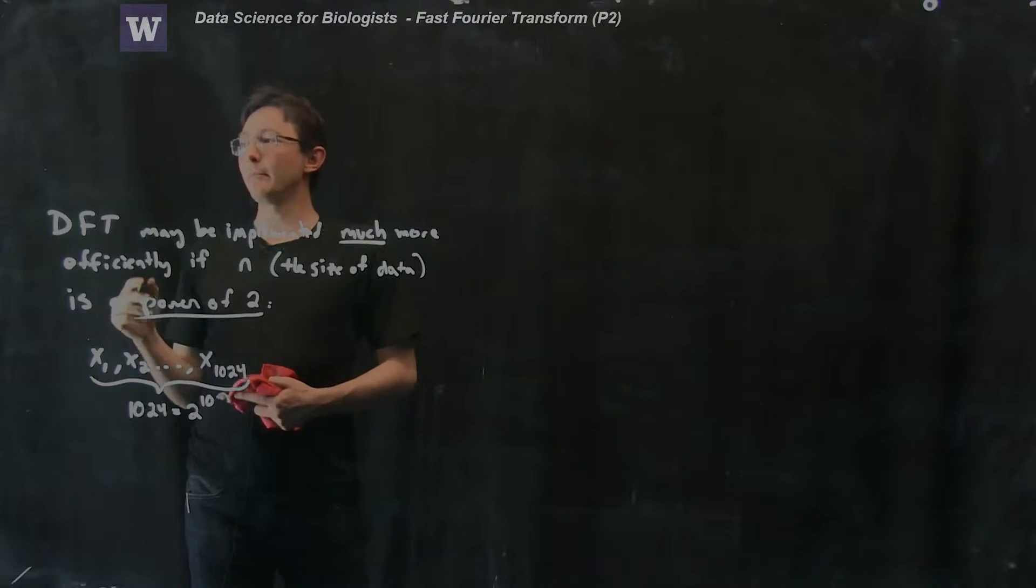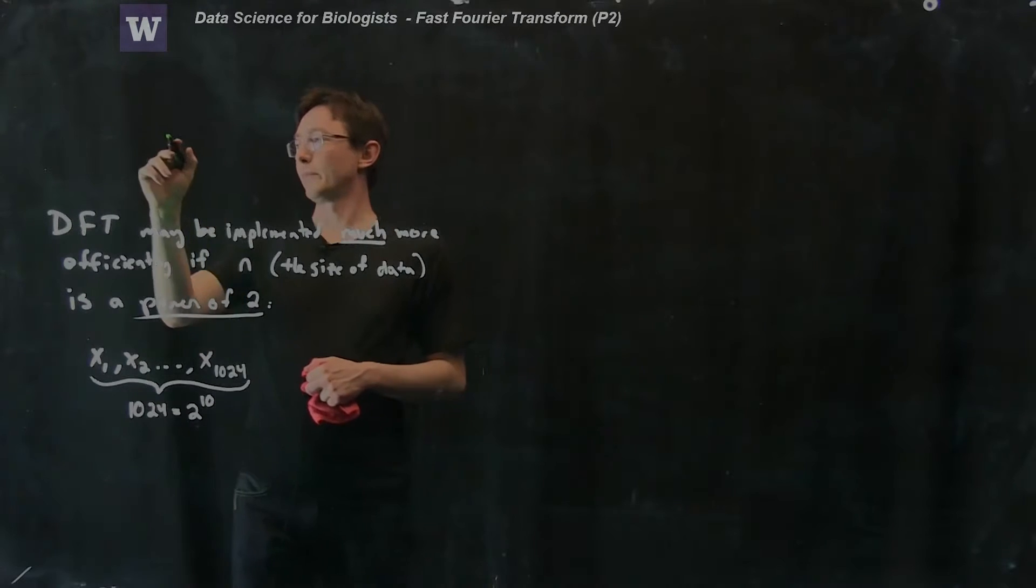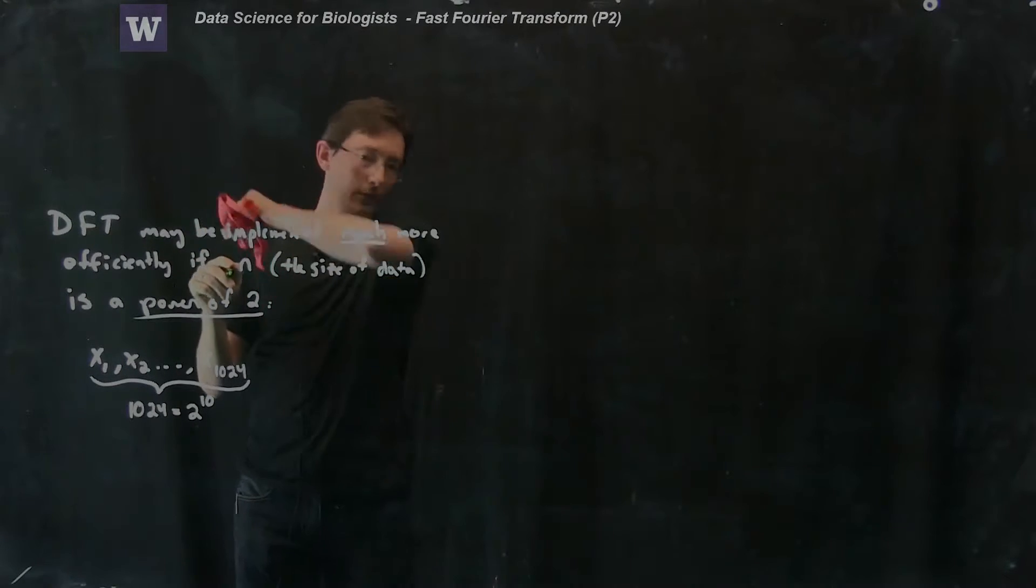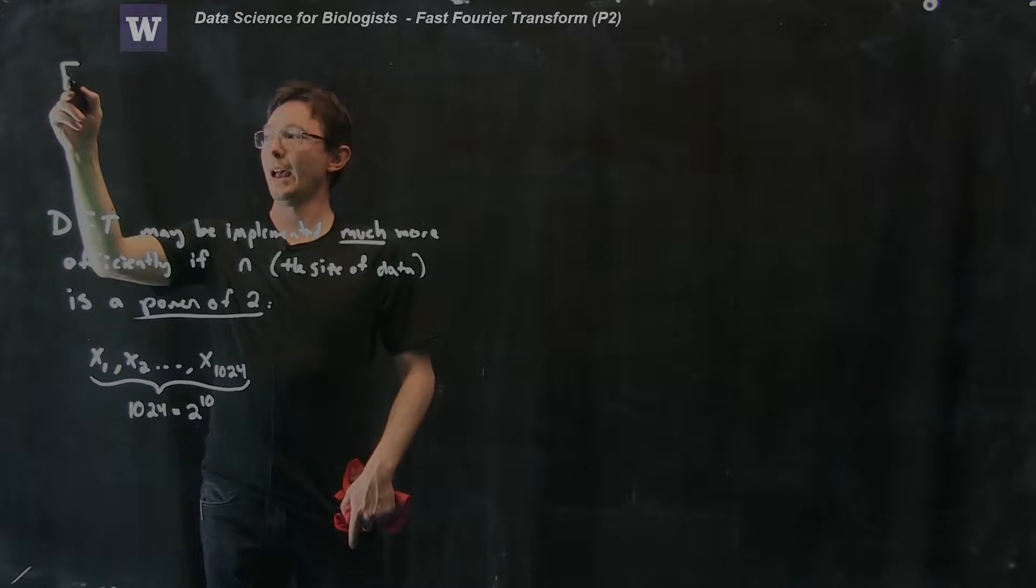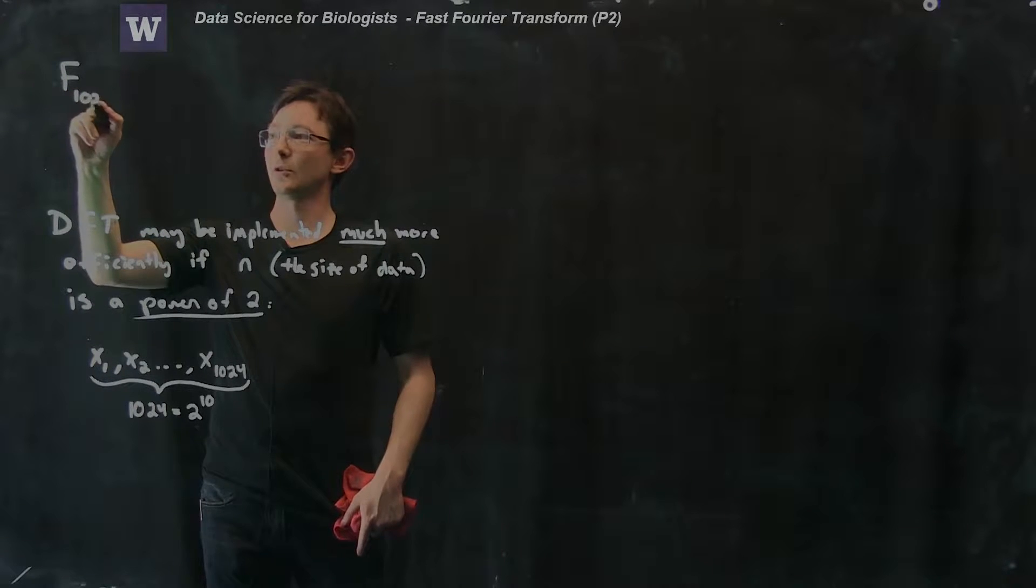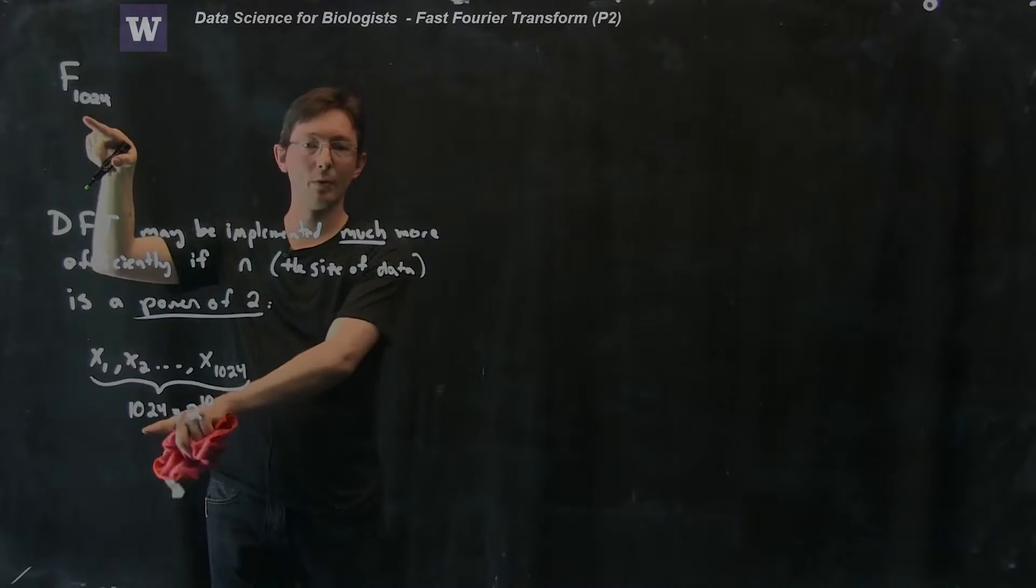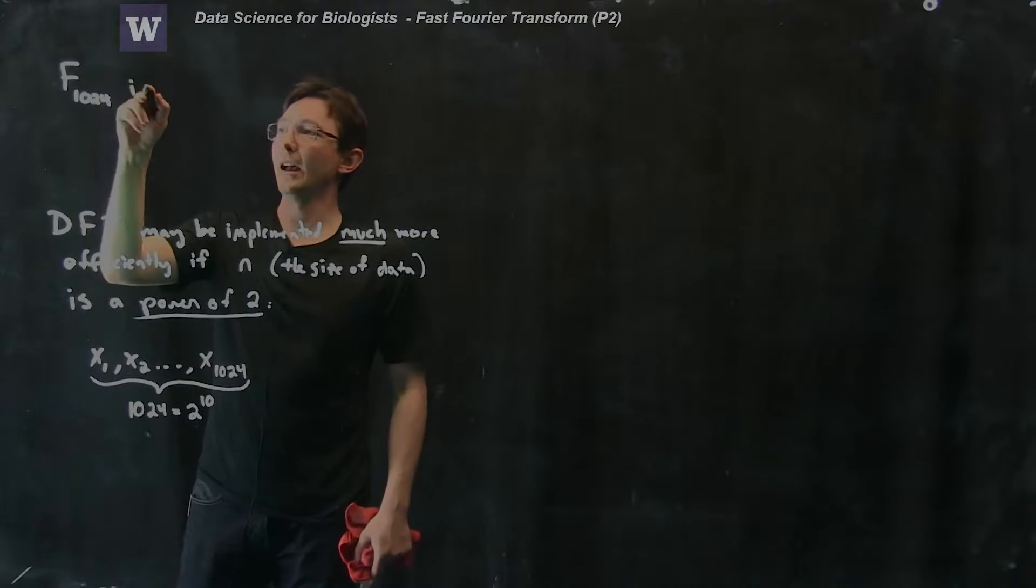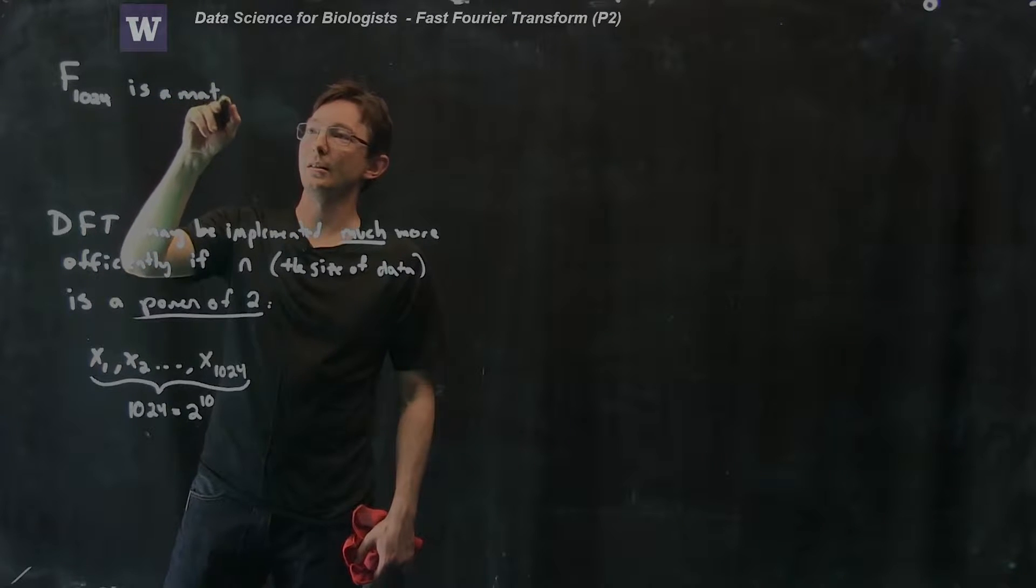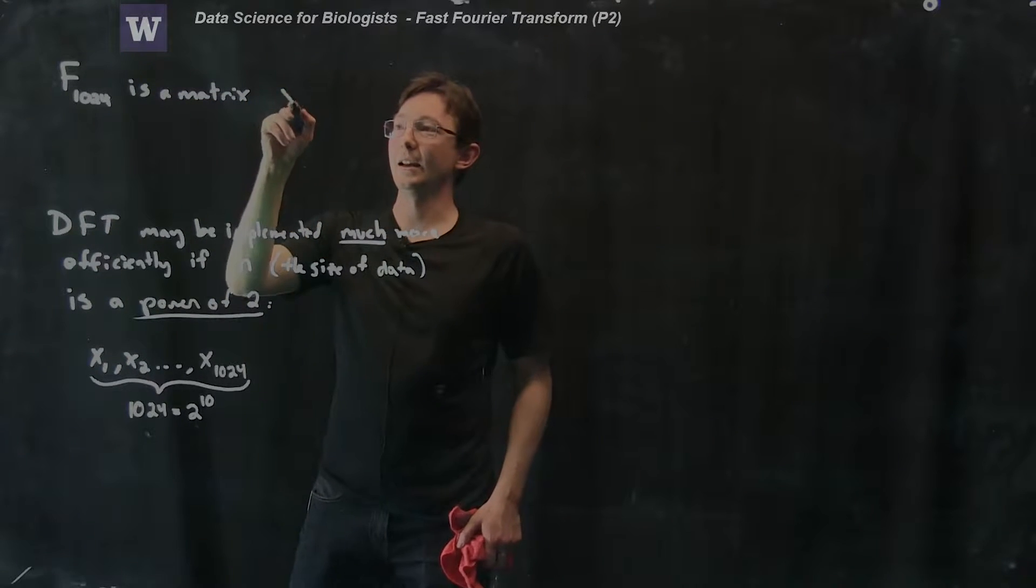Remember that we had this Fourier transform matrix F. We had this Fourier transform matrix F and I'm going to call it F1024 just to remember that it's a big 1024 by 1024 matrix.